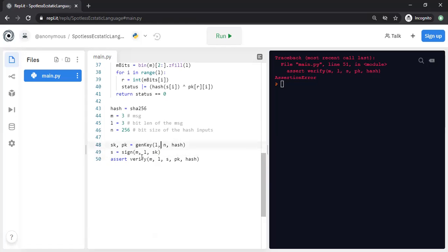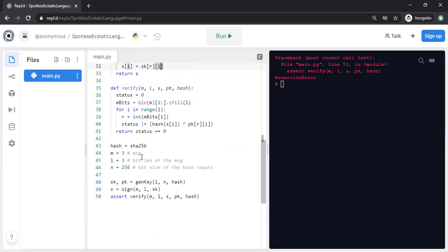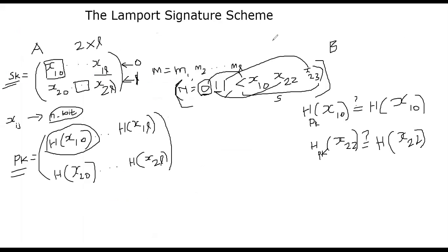To summarize: Alice wants to send an L-bit message to Bob. She generates two matrices — a secret key matrix (private key) and a public key matrix — both of dimension 2-by-L. The reason for two rows is that we sign bit by bit, and a bit can only be zero or one. If there are L-bit messages, we need L columns. That's why we need a 2-by-L matrix for both the secret and public keys.